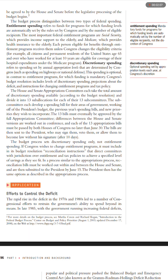The budget process distinguishes between two types of federal spending. Entitlement spending refers to funds for programs for which funding levels are automatically set by the rules set by Congress and by the number of eligible recipients. The most important federal entitlements are Social Security, which provides income support to the elderly, and Medicare, which provides health insurance to the elderly. Each person eligible for benefits through entitlement programs receives them unless Congress changes the eligibility criteria. For example, all citizens and permanent residents of the United States age 65 and over who have worked for at least 10 years are eligible for coverage of their hospital expenditures under the Medicare program.